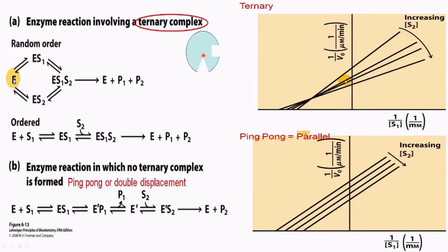Sometimes an enzyme can bind to two substrates at a time. That type of reaction involves the formation of a ternary complex, where the first substrate binds to the enzyme and the second substrate also binds to the enzyme to form a ternary complex. This ternary complex is further divided into two forms: random ordered and ordered form.